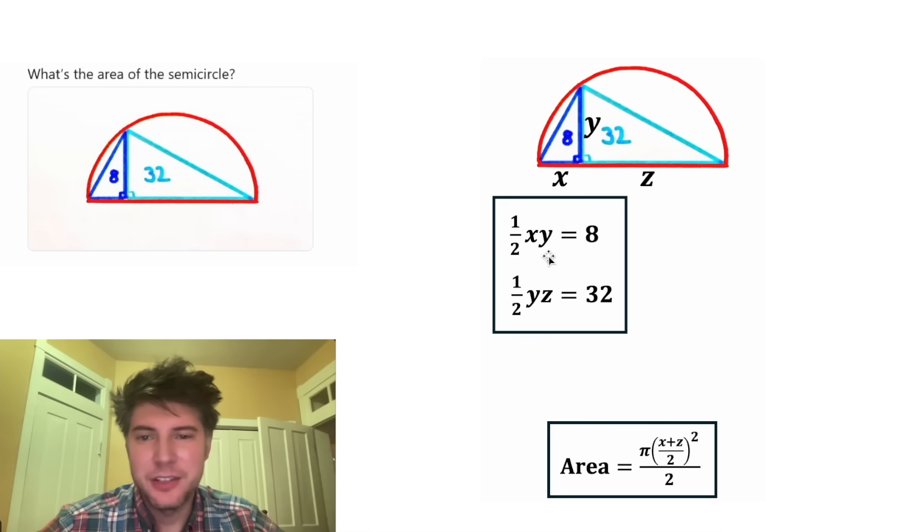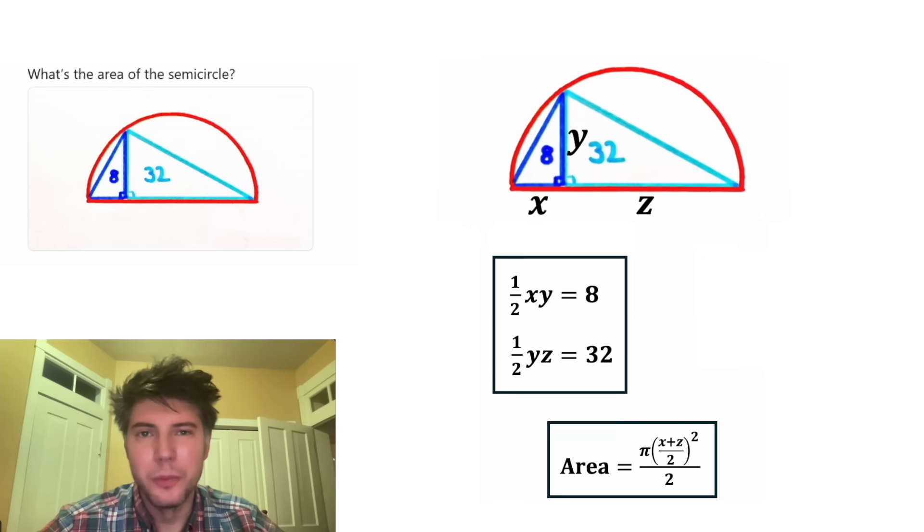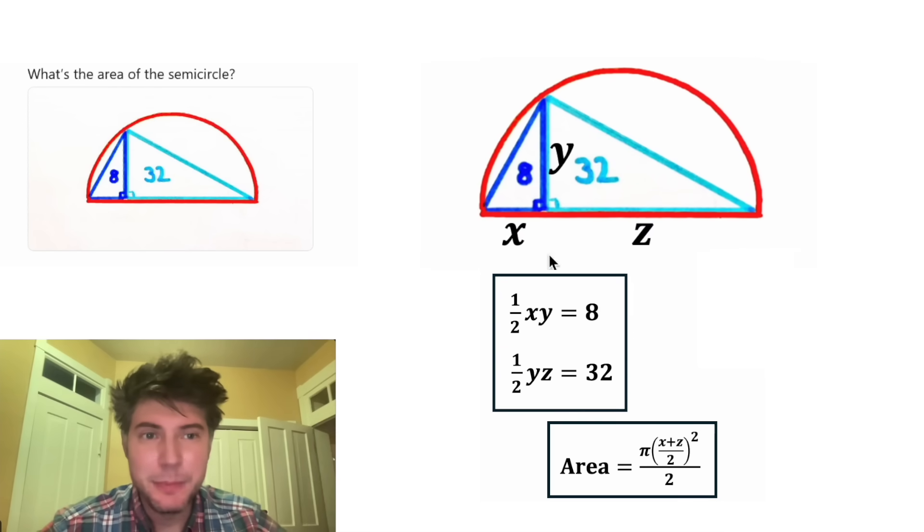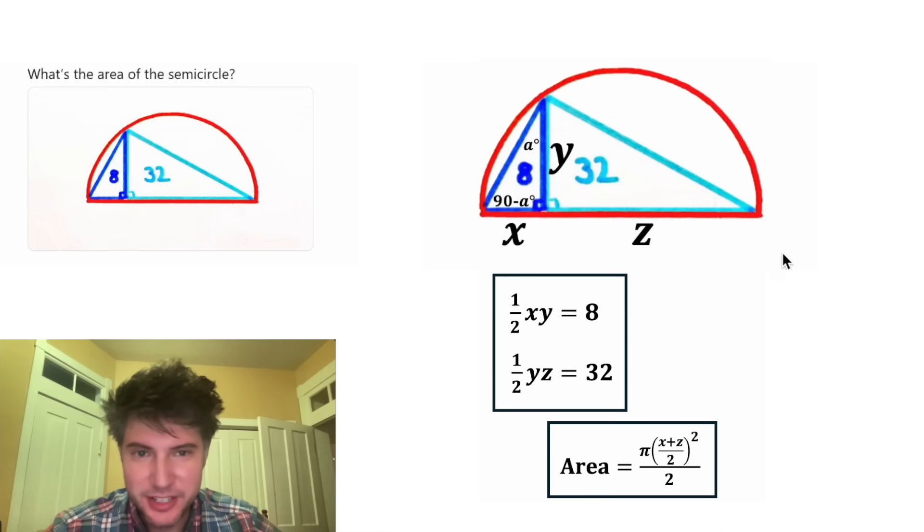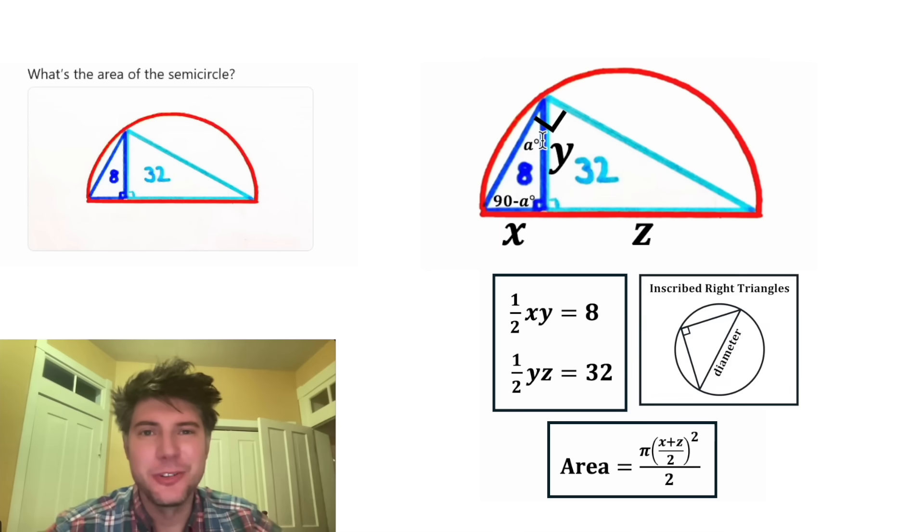So right now we have three variables, X, Y, and Z. We need to find one more equation. So let's inspect this closer. In this right triangle, let's name this angle A degrees. That means the other angle has to be 90 minus A degrees. And then since this triangle is sitting on the diameter, that makes this 90 degrees. Here's the notes right here. Anytime a triangle stands on a diameter like this, this is a 90 degree angle.